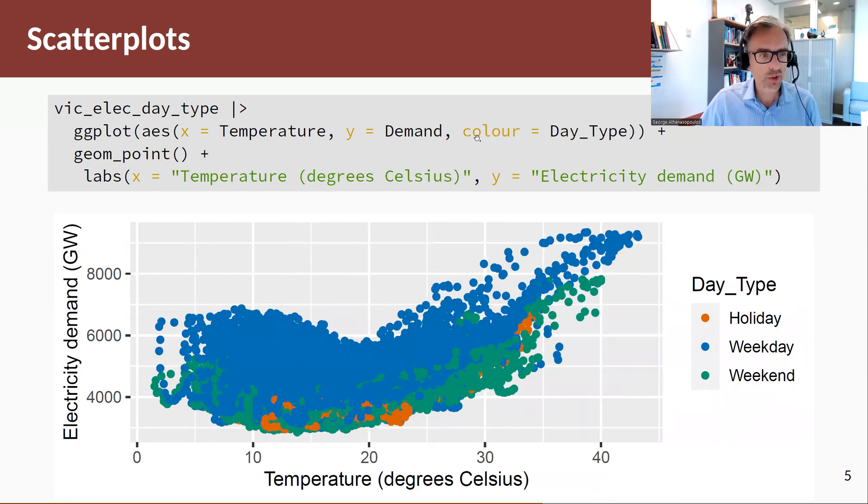A nice trick to do is to actually separate as I said between the day types, so here we have holidays whenever they fall or we have weekdays or weekends, and we can do that by using the color aesthetic in ggplot. So we're going to define color as day type.